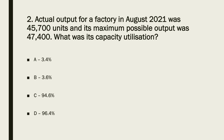Calculating capacity utilisation: the actual output is 45,700 and the maximum possible output is 47,400. Calculate that as a percentage — 45,700 divided by 47,400 times by 100 — which gives an answer of 96.4%. So the answer is D.